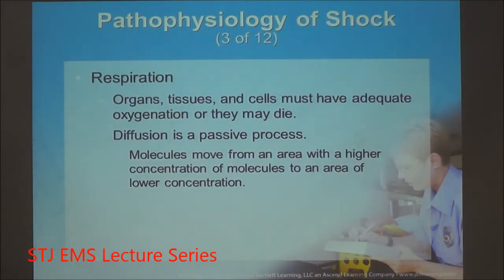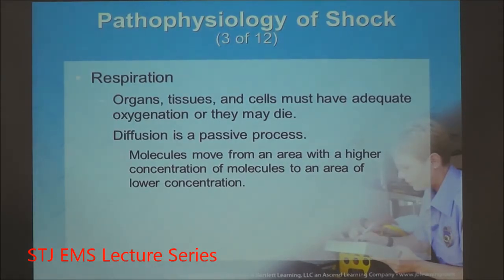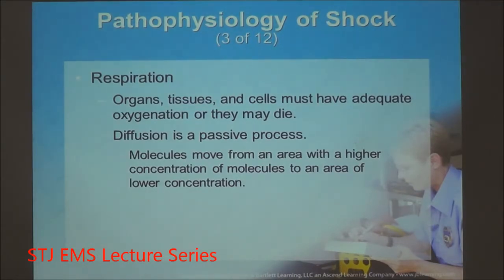Gas exchange occurs through a passive natural process known as diffusion — particles moving from an area of high concentration to an area of low concentration. At the alveoli, the capillary beds surround it. When you breathe in room air at 21% oxygen, the concentration is much higher in the alveolar space than in the capillaries. By diffusion, that oxygen carries across into the capillary beds, where red blood cells pick it up — four oxygen molecules seat on one hemoglobin protein.